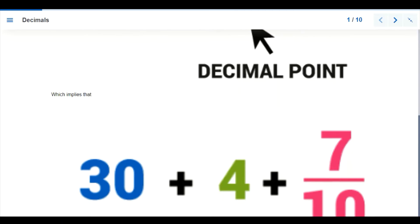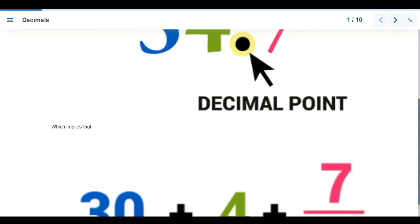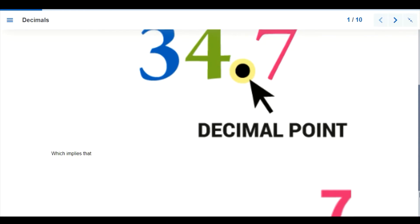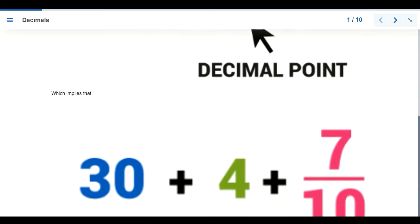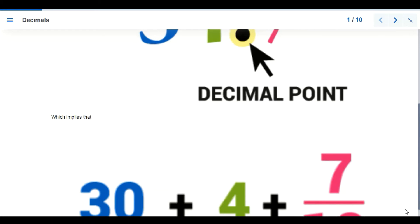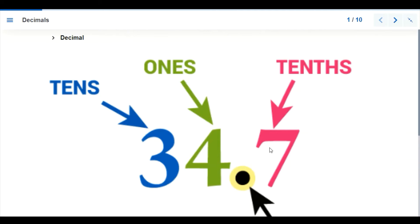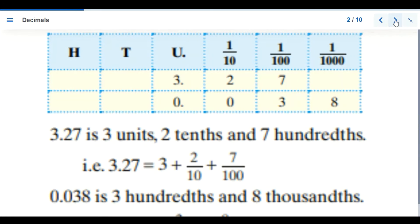We have 30 plus 4, which gives us 34. For the decimal point, 7 implies it has been expressed in decimal from fraction, so we have 7 over 10. When we divide 7 by 10, it's not possible directly — so we add 0 to 7, making 70. 10 goes into 70 seven times, and that's why we have 0.7. This is an example of how we write decimal values.